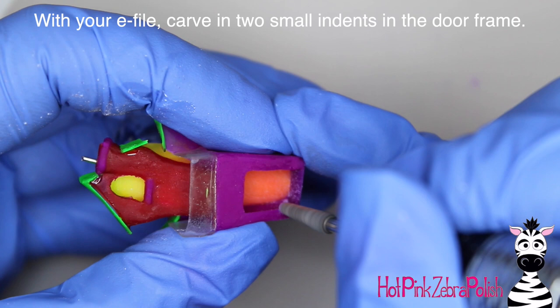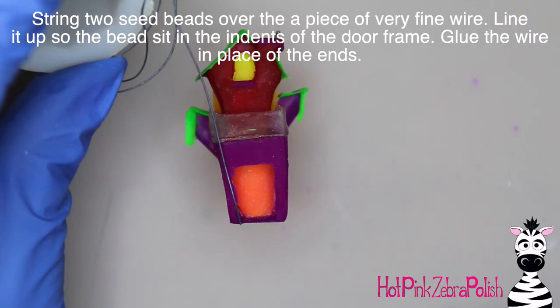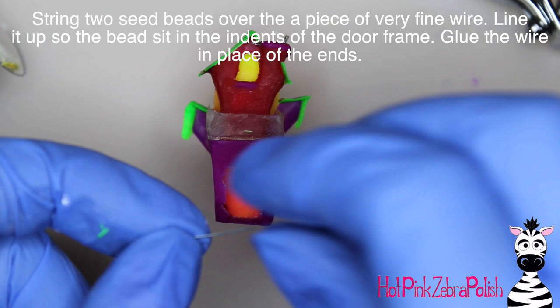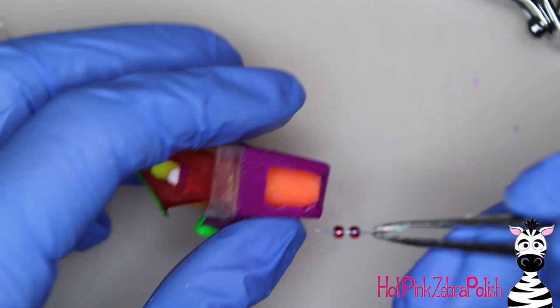So now with my e-file, I'm going to carve two little indents in the doorway of the first floor. So just take your e-file and this is real time. So you can see how slowly I carve these little indents in place. Just kind of tap your e-file into the places where you want those, and then you can dust it and then cut off a very tiny piece of a super thin piece of wire and put two beads on your little piece of wire.